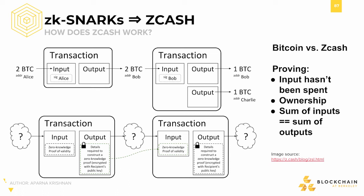Each valid transaction is sent with an accompanying ZK-SNARK, which proves the three facts we previously stated. Transaction inputs are proofs of validity for the transaction, and outputs are the details required to construct the zero-knowledge proof, encrypted with the recipient's public key. The information required to spend the transaction outputs is also attached to the transaction, again encrypted, and details how to construct a new ZK-SNARK that enables spending.